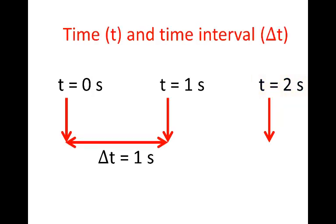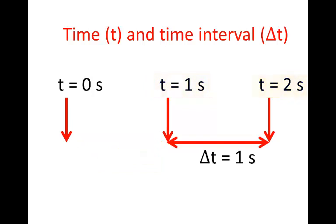a period of 1 second passes. That's an interval of 1 second duration. Delta T is 1 second. From when it says 1 second to when it says 2 seconds, that's another interval of 1 second duration.